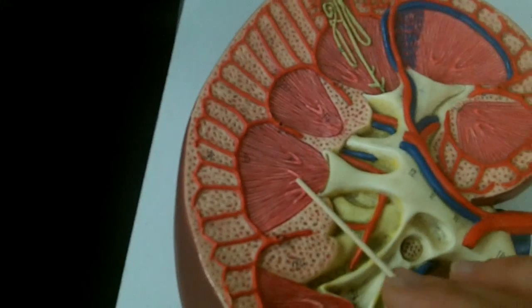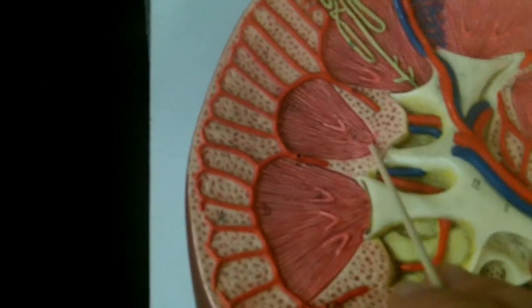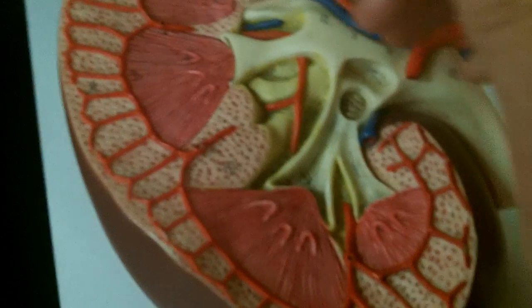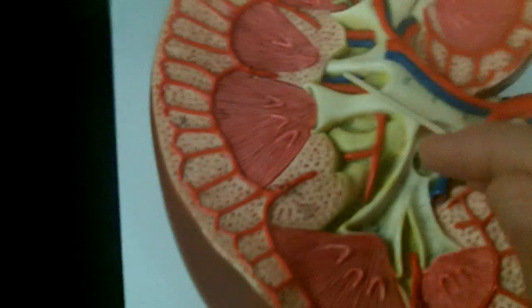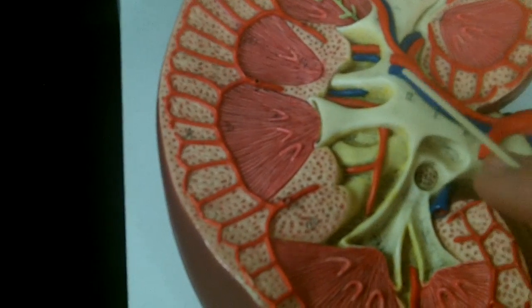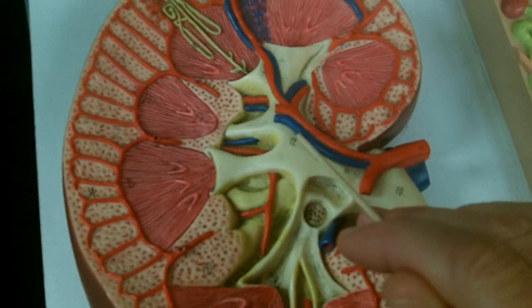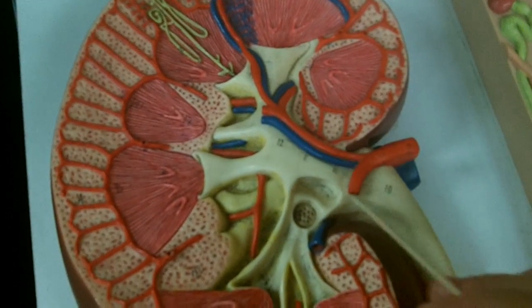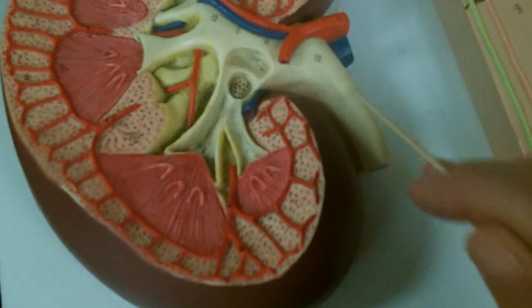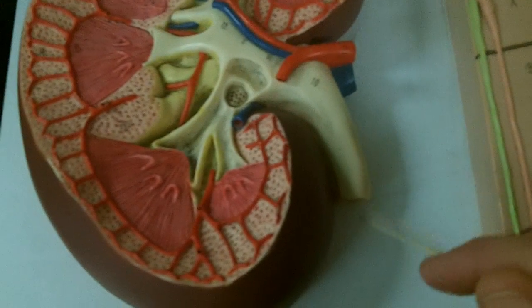The renal pyramids have their apex which is called a papilla, so the renal papilla is where the urine is going to drip out into a minor calyx. Many minor calyces merge to form a major calyx, and then the major calyces merge to form the renal pelvis which will then extend out of the kidney and turn into the ureter.